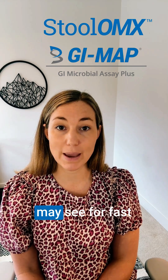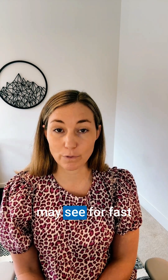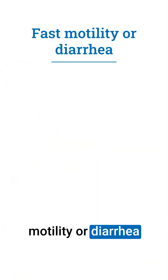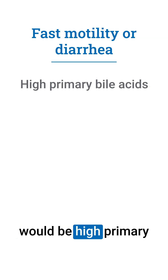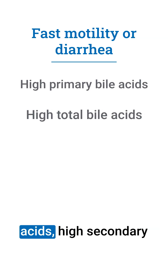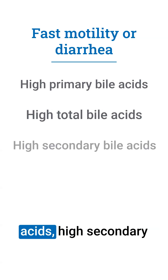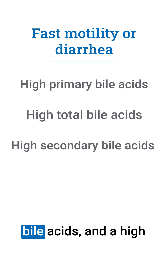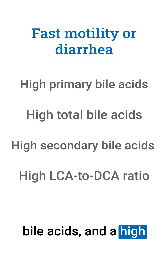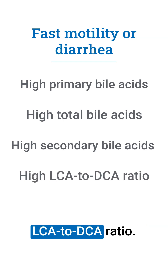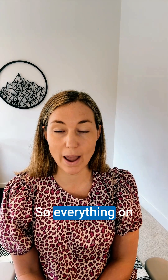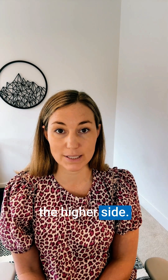Patterns that you may see for fast motility or diarrhea would be high primary bile acids, high total bile acids, high secondary bile acids, and a high LCA to DCA ratio — so everything on the higher side.